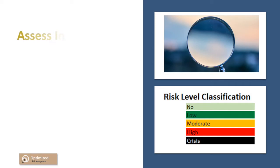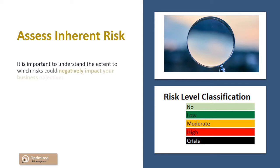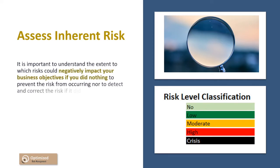You have a risk that you have identified could happen in your business and you want to make sure that you are satisfactorily protected against this risk. The first step is to assess your inherent risk — that is, understanding the extent to which this risk could negatively impact your business objectives if you did nothing to prevent the risk from occurring, nor to detect and correct the risk if it did occur. This step is sometimes overlooked because it can be challenging to take a step back and really consider the inherent risk.